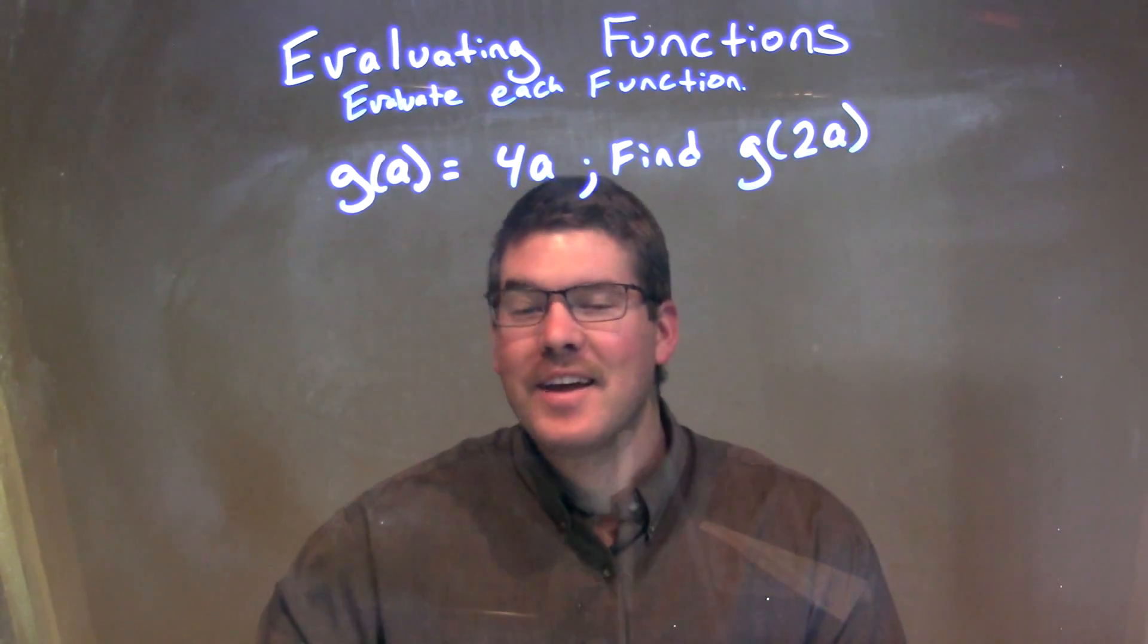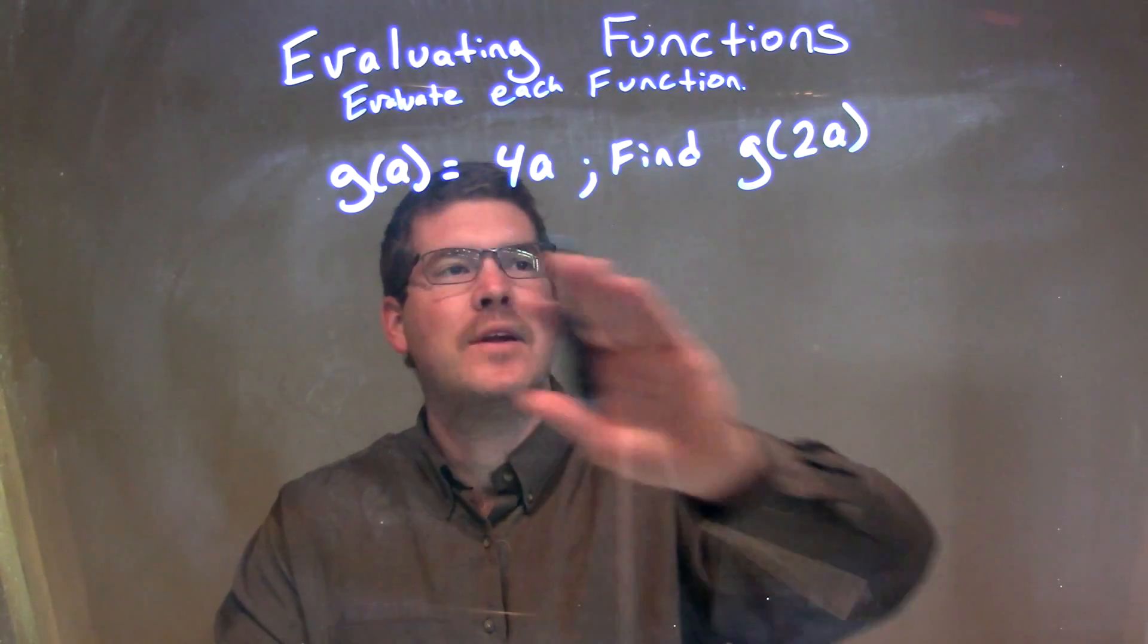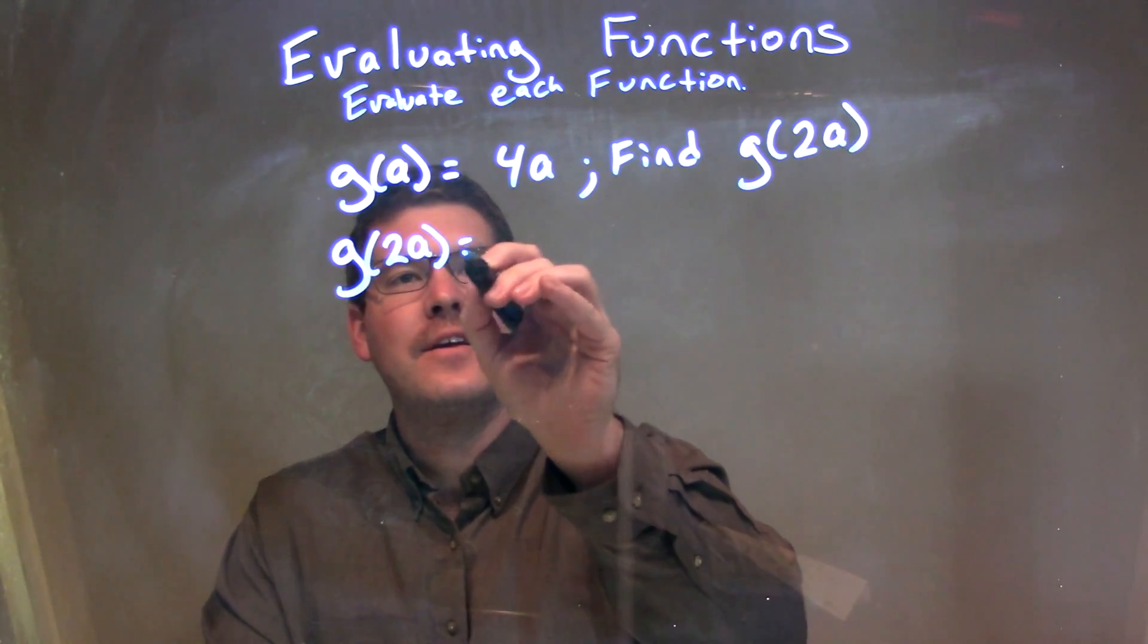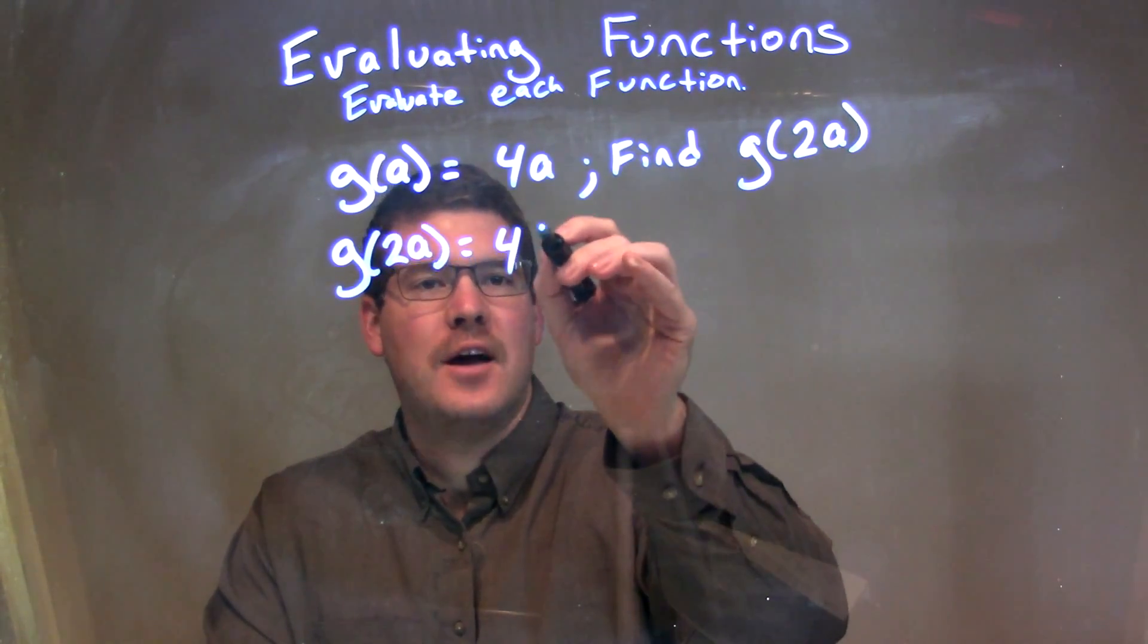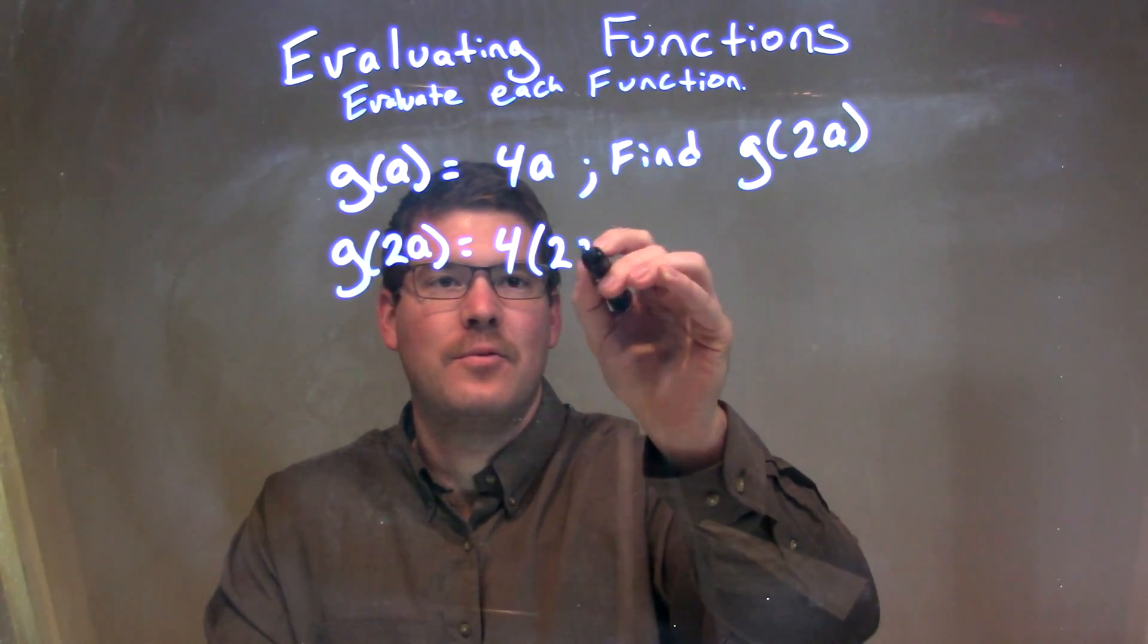Alright, this gets a little confusing here, so let's take our time. Every single time we see an a, we need to plug in a 2a. So, g of 2a is equal to 4 times, here's my a, and I'm going to plug in 2a for it, 2a.